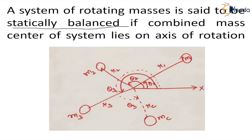Let's see — in this case we have taken three masses m1, m2 and m3 at radial distances r1, r2 and r3. Taking the x-axis as the reference, the angle for mass m1 is theta 1. Whenever we denote the angular position of any mass, we do it counterclockwise from the x-axis. So for mass m2 this is theta 2, and for mass m3 this is theta 3.